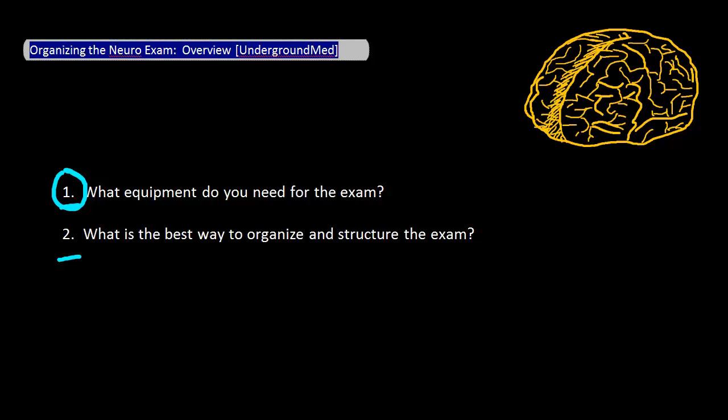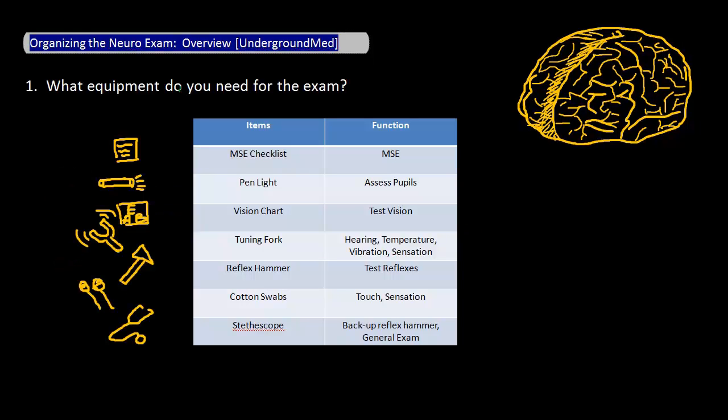There are seven items that you should have on you at all times. First, you should have a checklist of mental status exam questions with you. You can either make your own list that you refer to when you need it or buy a small pocket reference guide that contains this list in it.